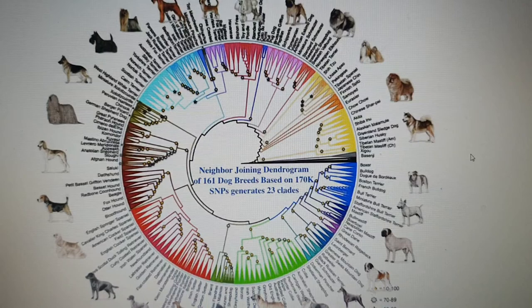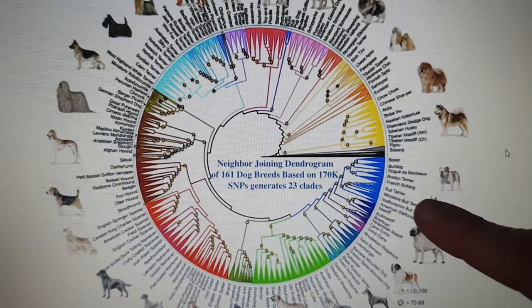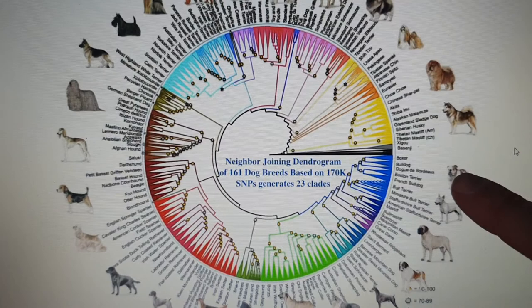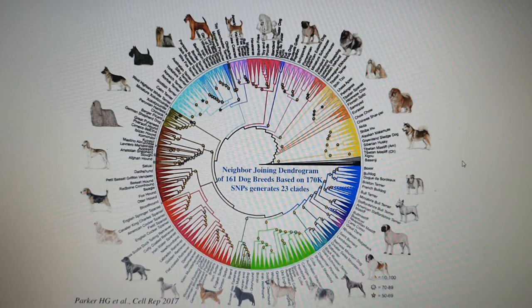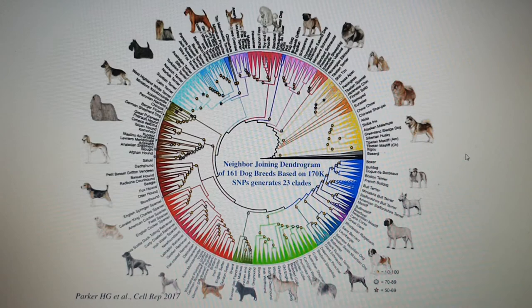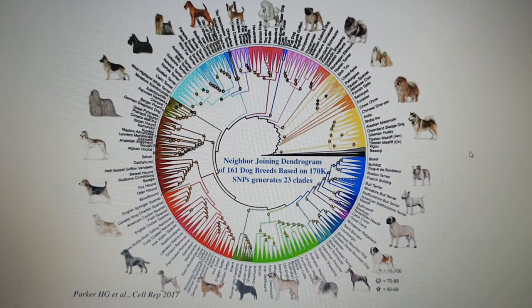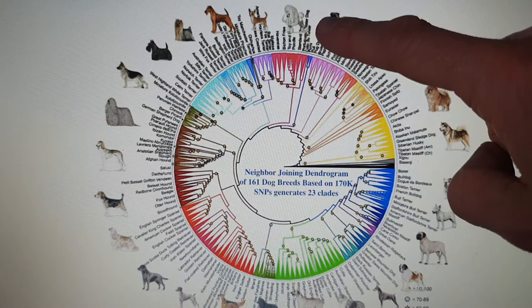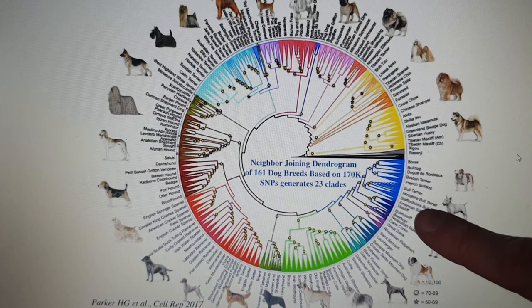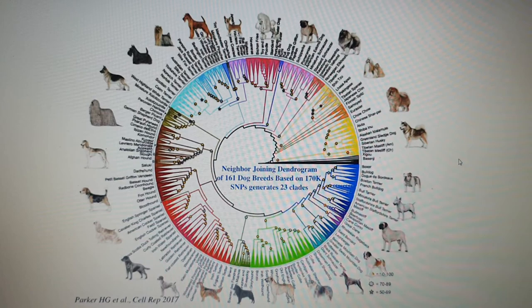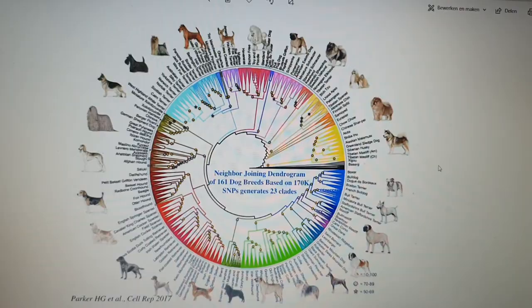Interestingly, the Bull Mastiff and Mastiff are closer genetically to the Bull Terriers — especially the Staffordshire Bull Terrier and American Staffordshire Terrier — than they are to the Bulldog. This is because the modern Bulldog has had non-functional dogs bred in to achieve its current appearance. The original Bulldog looked far more like the current-day American Staffordshire or Staffordshire Bull Terrier.